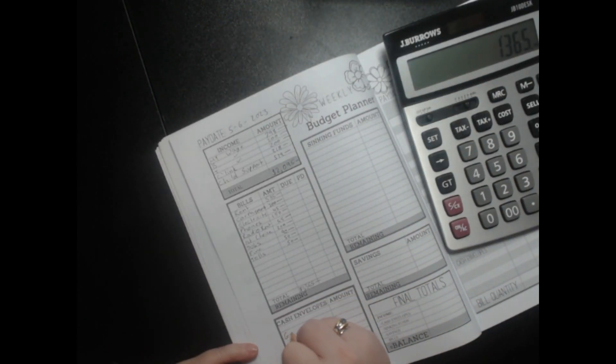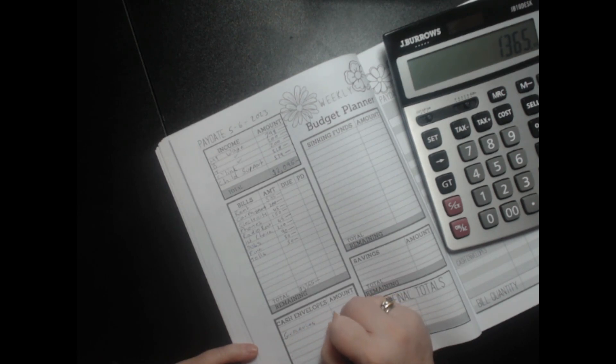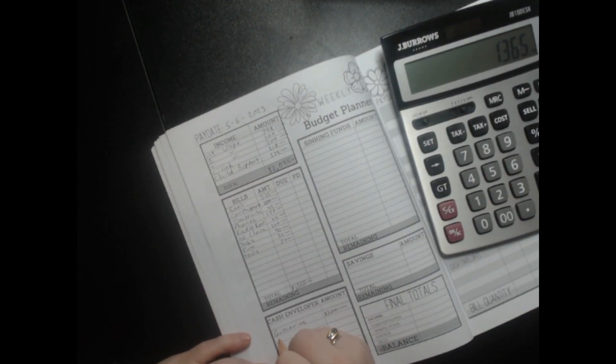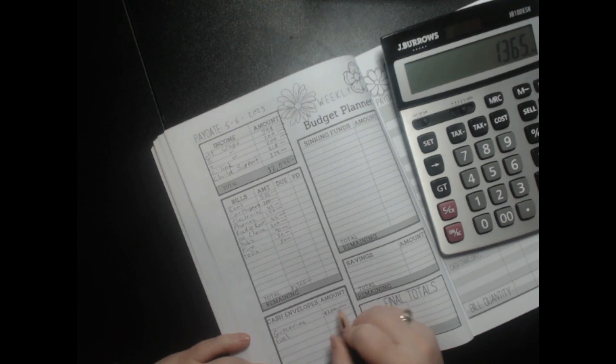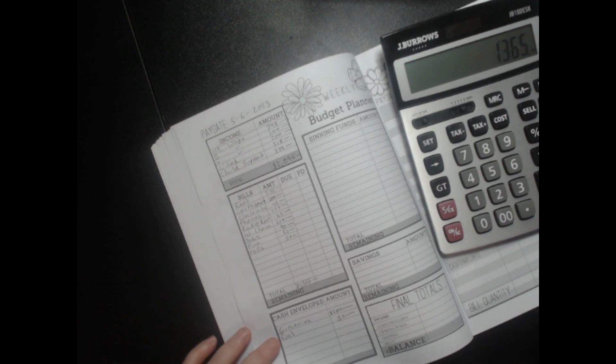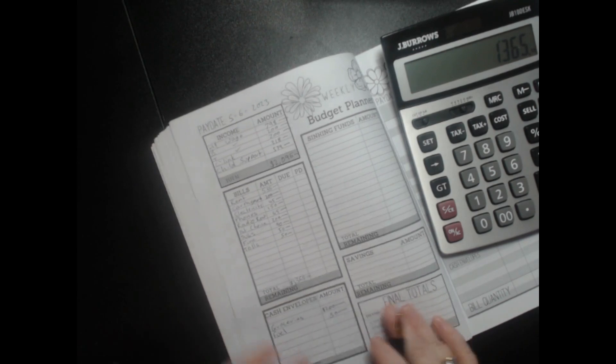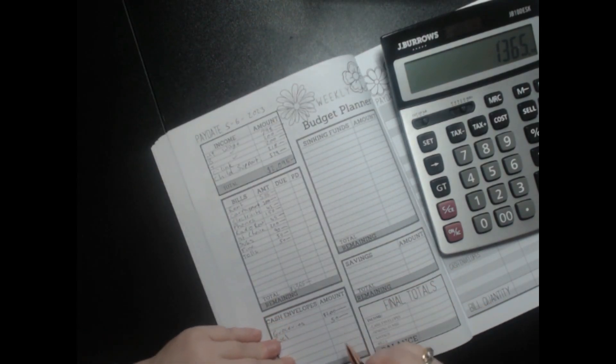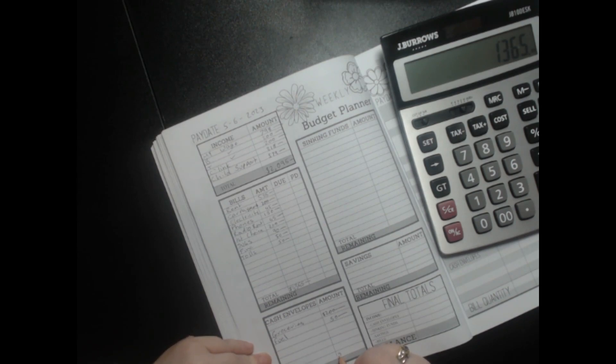So my cash envelopes, groceries, I'm going to put 200 cause I just don't have enough. I can adjust it later. Fuel is getting my normal 50 now cause I don't have to go to Wollongong quite as often. And I do have some in my miscellaneous if I do need it. So that's 250 there.